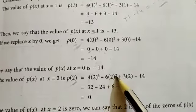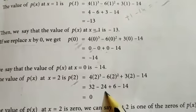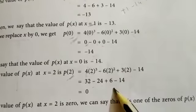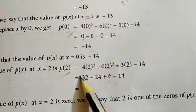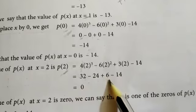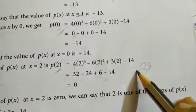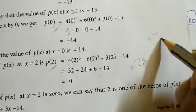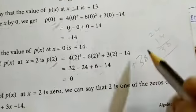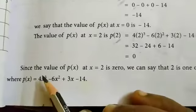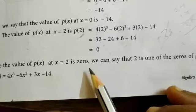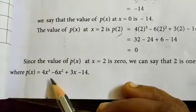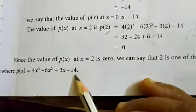Minus only powers of 2: 2 twos are 4, so 4 sixes are 24, minus 24. Next 3 twos are 6, so plus 6 minus 14. Positive numbers: 32 plus 6 means 38. Negative: 24 plus 14 equals 38. So 38 minus 38 is equal to 0. Since the value of p of x at x equal to 2 is 0, we can say that 2 is one of the zeros of p of x, where p of x equals 4x cubed minus 6x squared plus 3x minus 14.